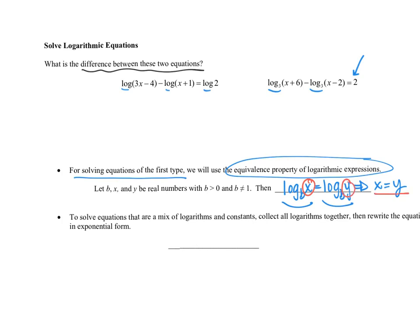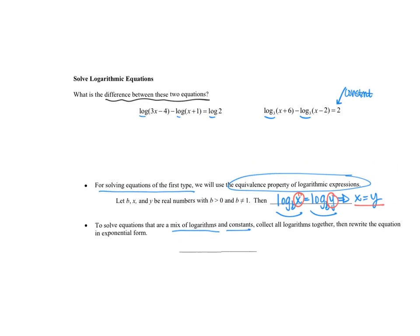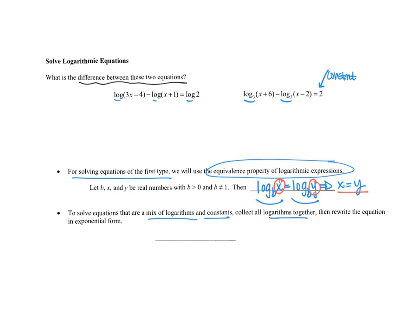When solving equations like the right-side type — a mix of logs and a constant number like 2 — we call that number a constant because it has no variables. For those, we want to collect all the logs together on one side, then rewrite the equation in exponential form. A reminder: log base b of x equal to y can be rewritten as b to the y equals x, since log is equal to the exponent.